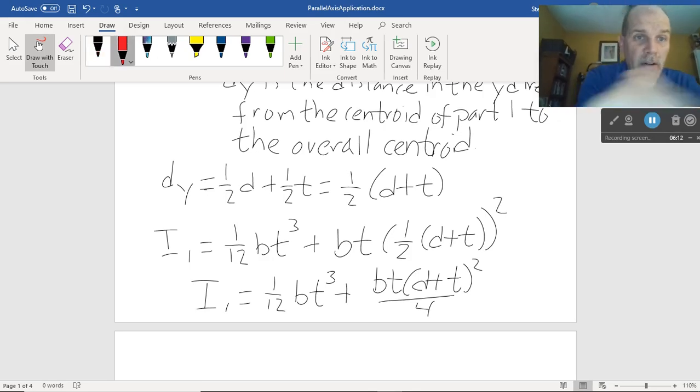This last term here, that's the parallel axis part, and that's very important. Putting little stars by it. And that's the thing I see people forget the most, far and away. People just want to use the 1/12 bt³ equation everywhere, and forget about the fact that they have to move from the centroid of the part to the centroid of the whole.